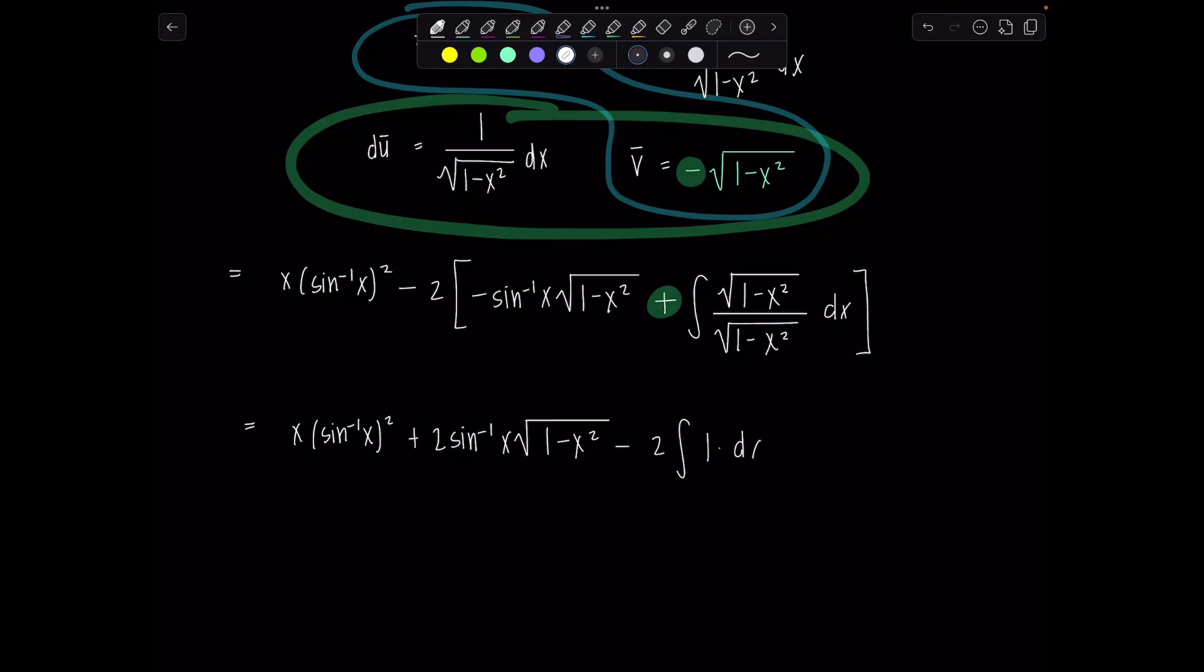x sine inverse of x squared plus two sine inverse of x square root one minus x squared minus antiderivative is just going to give me an x and now we can put plus c because I saved it. That's why I didn't want to use it earlier so we could just finish nice and clean and crisp.